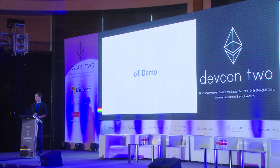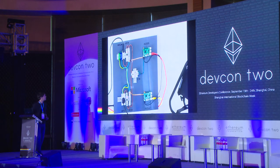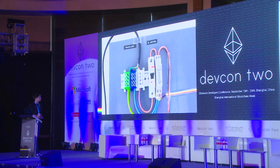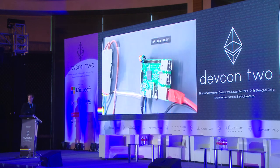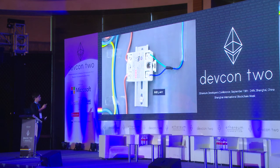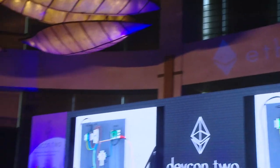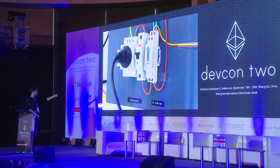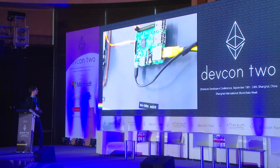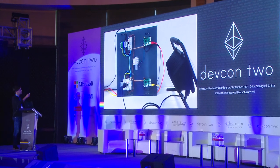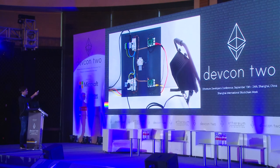One of the better applications of Raiden is probably in the Internet of Things. We prepared a demo for that. The basic setup is that we have a producer and a consumer of electricity. The producer has some meters to account for how many energy units were transferred, and there's a Raspberry Pi running a Raiden node. The Raspberry Pi can control a relay to switch off the electricity supply. The same exists on the consumer side — also a meter and a Raspberry Pi with a Raiden node. The producer requires that the consumer send some tokens, and if they do, the producer will start supplying electricity and the light goes on.